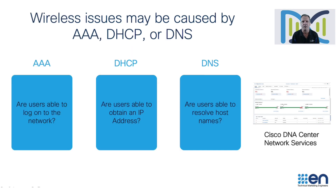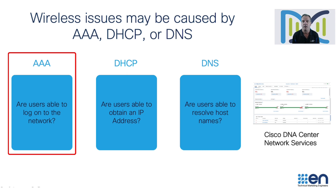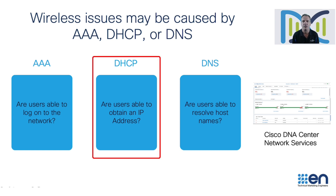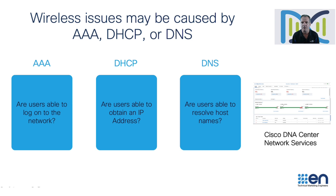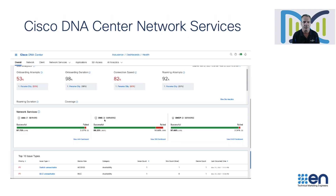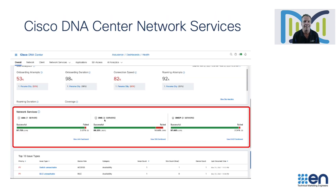However, performance is not always caused by a particular network or client. Wireless issues can often be caused by something else in the network. That's why we've added Network Services to Cisco DNA Center Assurance. Can your wireless clients log on to the network? Is the AAA server down or slow to respond? If they are able to log in, are they able to get an IP address? Is there an issue with your DHCP servers? If they are able to log in and obtain an IP address, are they able to resolve host names? Is DNS working? Cisco DNA Center provides this information to help you troubleshoot these types of issues quickly and easily to ensure an optimal user experience.